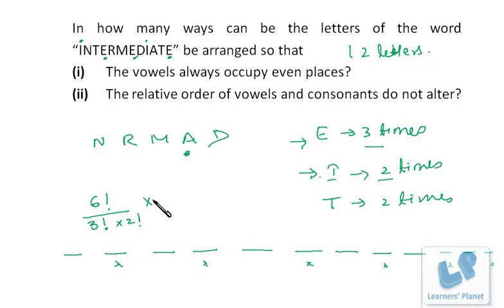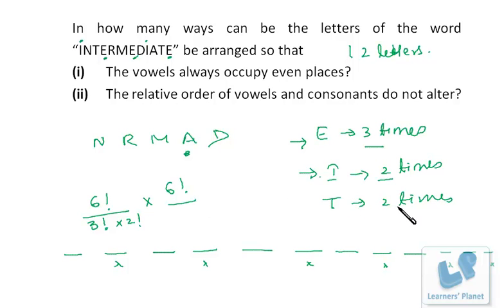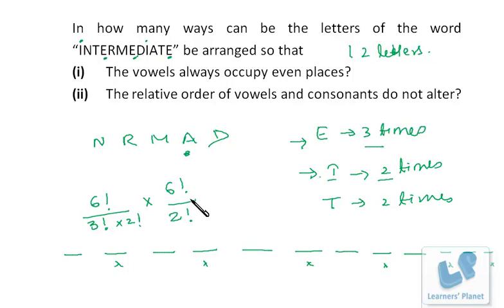The remaining six consonants can be arranged in the six odd positions in 6! ways. Since T is repeated two times among the consonants, we divide by 2!. So the total number of arrangements is (6!/3!×2!) × (6!/2!). You can compute that to get the final numerical answer.